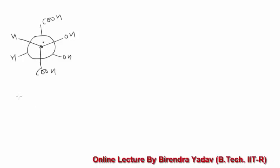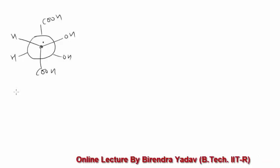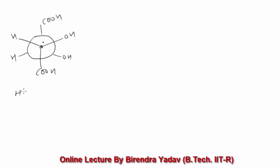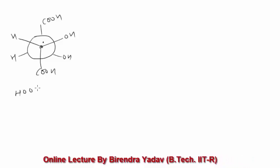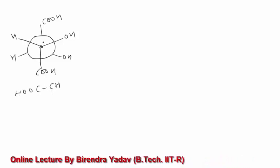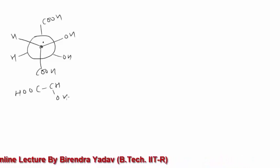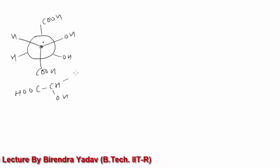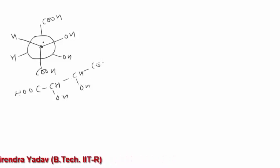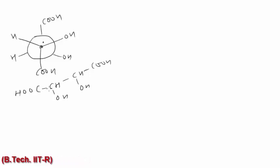If I try to write the bond structure, it will look like this. Now you can see: front carbon is connected to CHO, OH, and H; back carbon is connected to CHO, OH, and H.